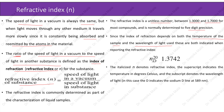Here, as you can see in the example, the italicized N denotes refractive index. The superscript indicates the temperature in degrees Celsius, that is 20 degrees Celsius, and the subscript denotes the wavelength of light. In this case, the D indicates the sodium D line at 589 nm, and 1.3742 is an example showing the refractive index of any substance.